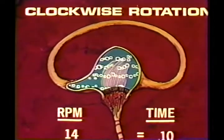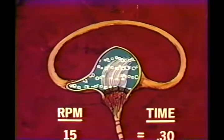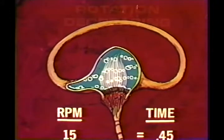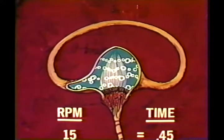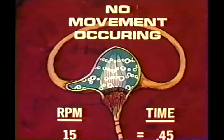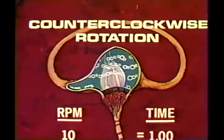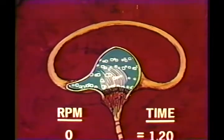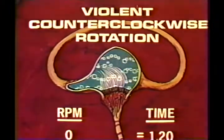As rotation approaches a constant speed of about 15 RPM, the fluid slowly begins to catch up, giving the impression the subject is slowing down — a false sensation. Had he been kept at constant speed, the cupola would return to vertical when both fluid and canal rotate at the same speed, giving another false sensation of no motion at all. Deceleration causes the subject to sense a counterclockwise turn. When stopped suddenly to zero RPM, the fluid continues rushing onward, bending the cupola all the way over — indicating a violent turn to the left.